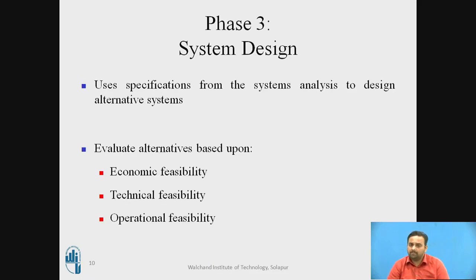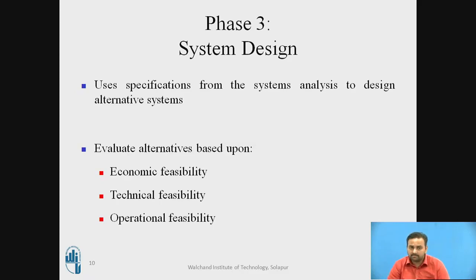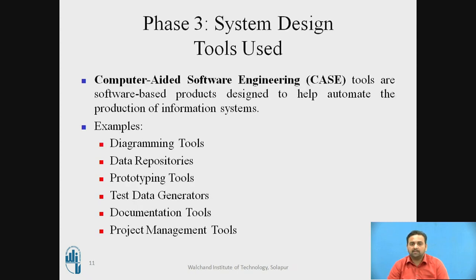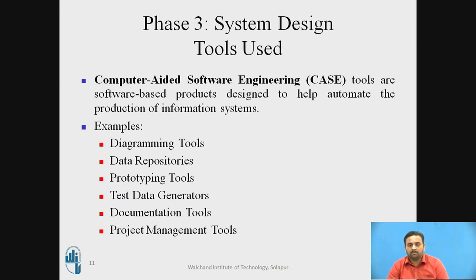The third phase is the design phase. Having done the investigation and analysis, now you can actually design the system. You have to take care of mainly three things: it should be economically feasible, technically feasible, and operationally feasible — meaning it should actually work. The tools used during this design procedure are mainly called CASE — computer-aided software engineering. These tools automate the production of information systems, and examples include diagramming tools, prototyping tools, data repositories, documentation tools, and project management tools.